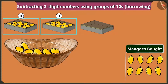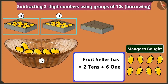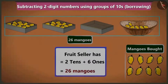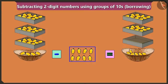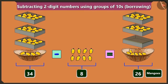Mommy, there are two boxes of ten mangoes each and there are one, two, three, four, five, and six mangoes in the basket. So the fruit seller would have two tens and six ones, means twenty-six mangoes left. So Bubbly, we subtracted eight mangoes from thirty-four mangoes, and now there are twenty-six mangoes. It means thirty-four minus eight equals twenty-six mangoes.